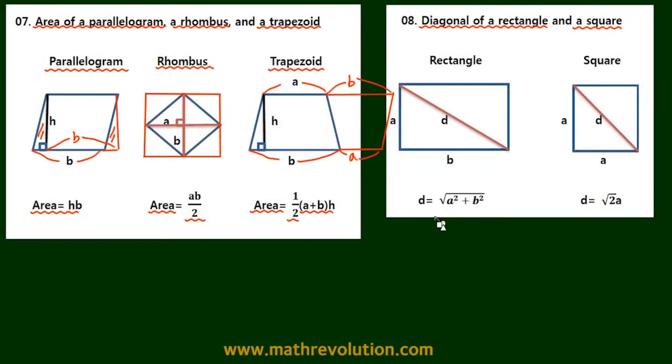All right, so on a rectangle, the length of D is the square root of A squared plus B squared, and in square, it's just square root of 2A.